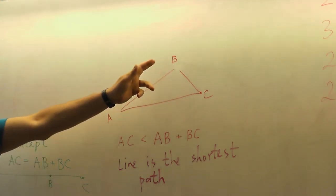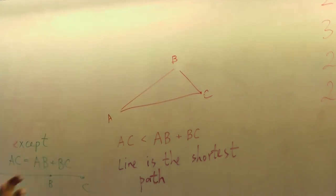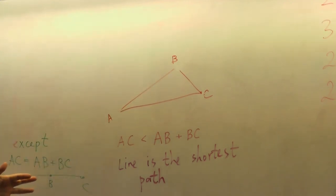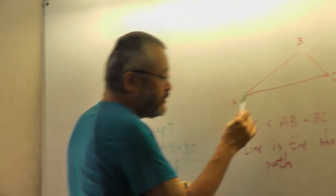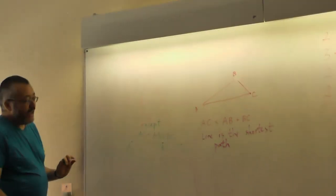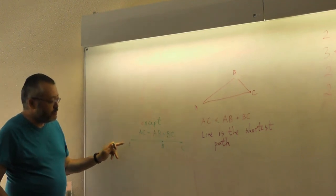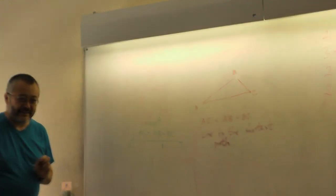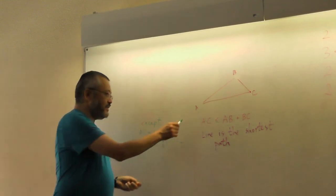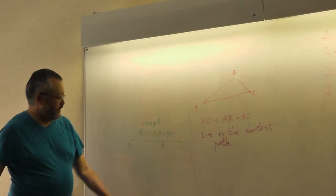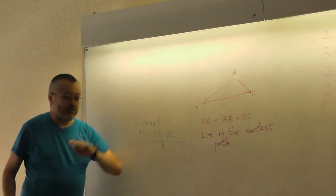But this is true for every three points. Whether they have a triangle, whether they have one line. And so we can write it for all cases. And there is one special thing. When it's equal. When B is between A and C. And this is true all the time.